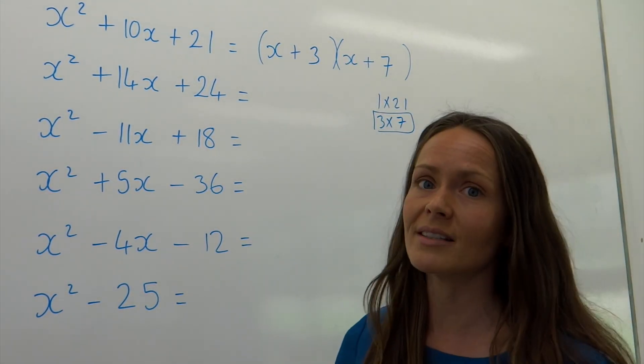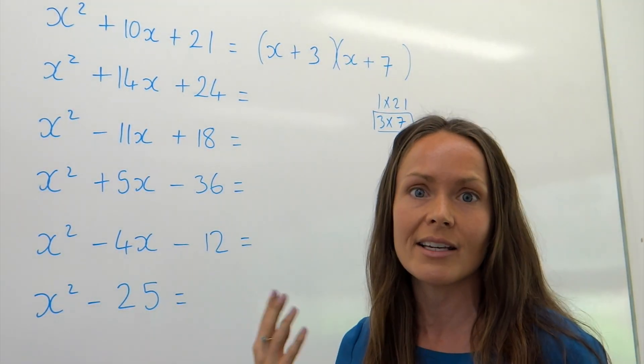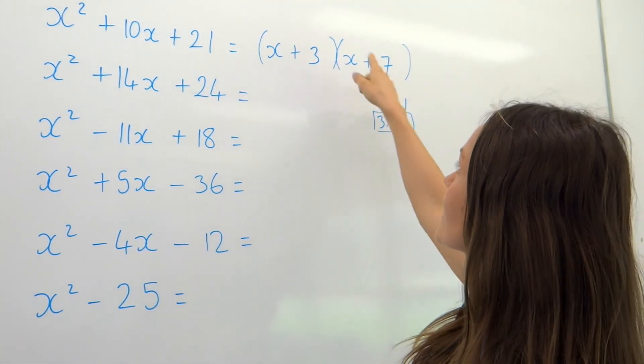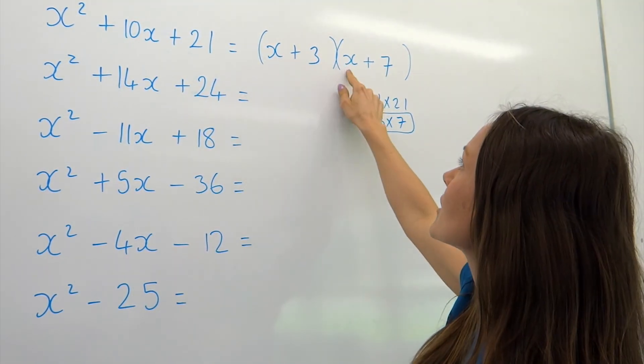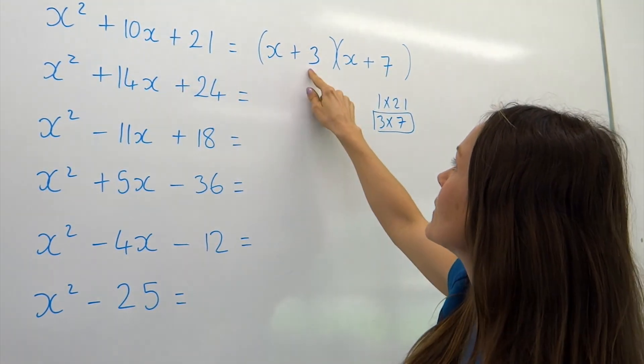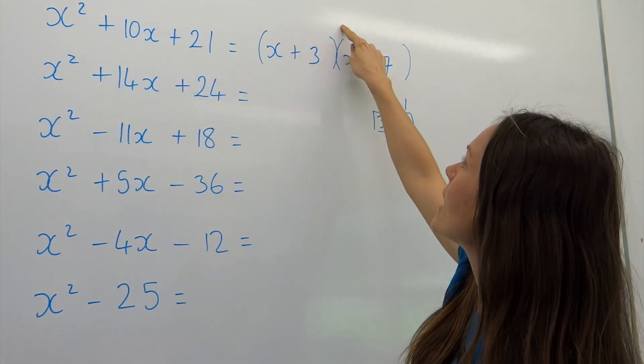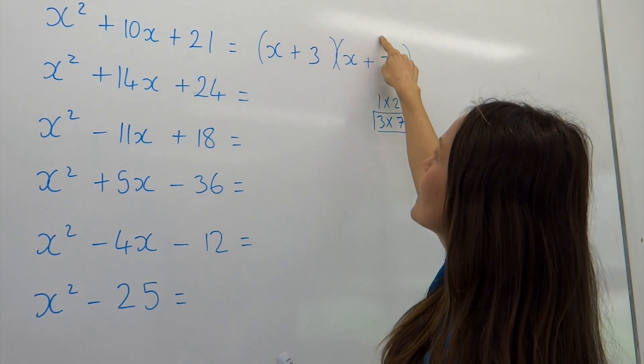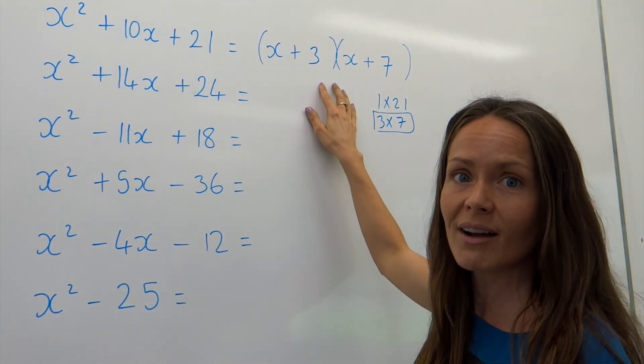Just like when you did the simple core factorizing, I think it's a good idea just to check or at least in your head do a check. When you expand these brackets, it should take you back to what you started with. So x times x is x squared, 3 times 7 gives us the 21, and then we've got 3x and also 7x, which would simplify to give 10x. So I know I've done that one correctly.